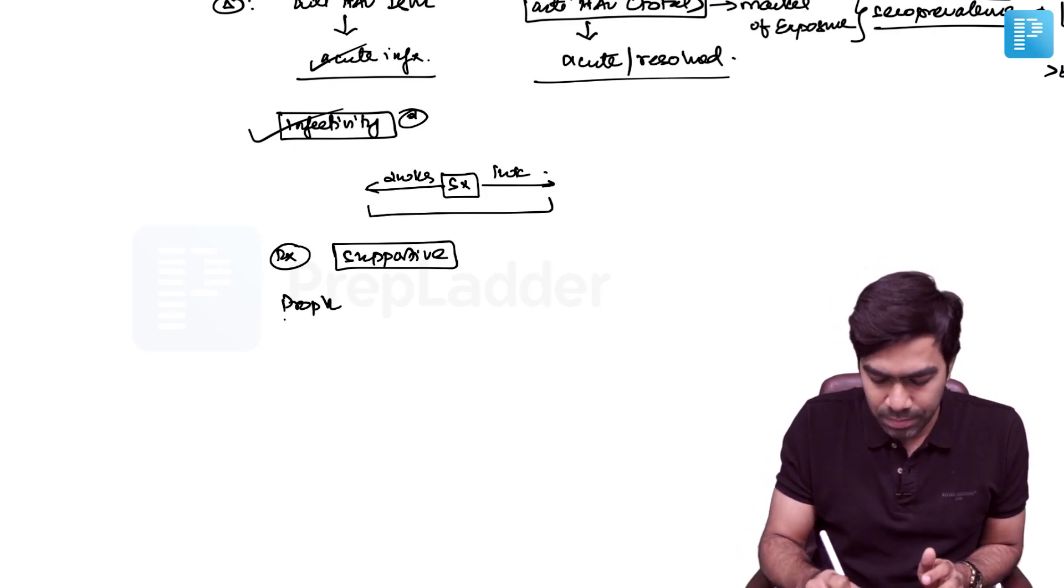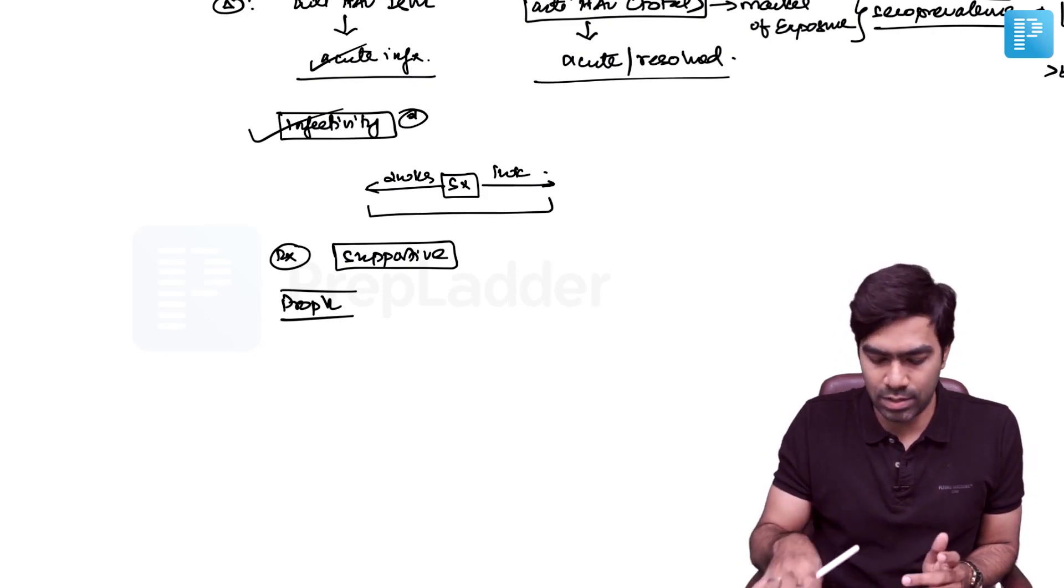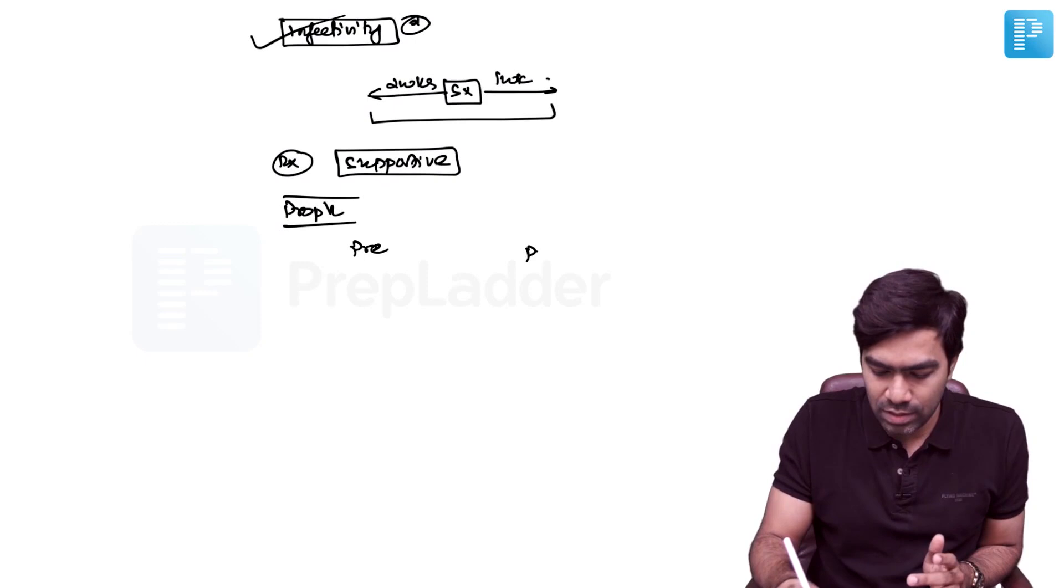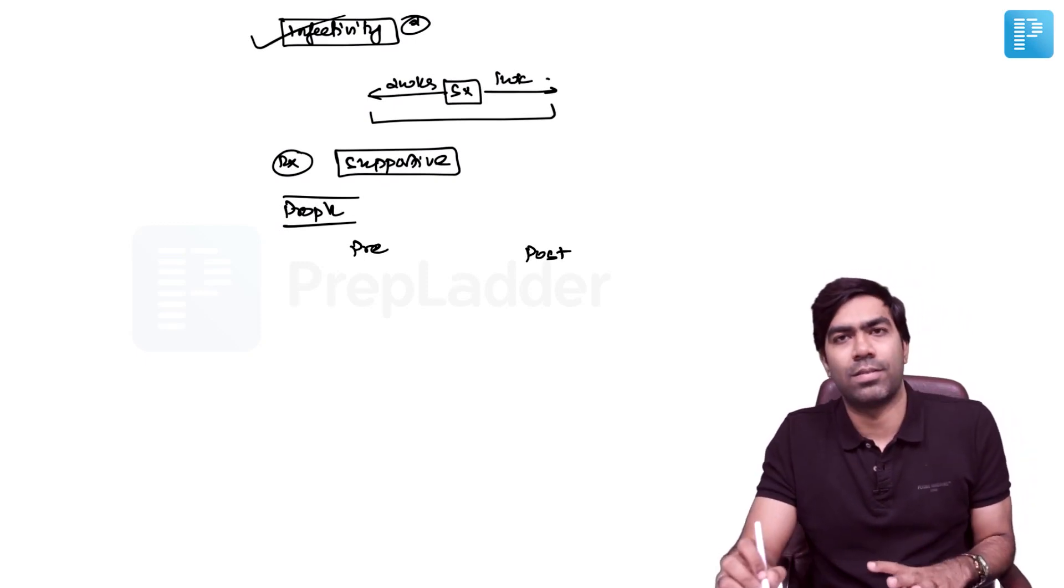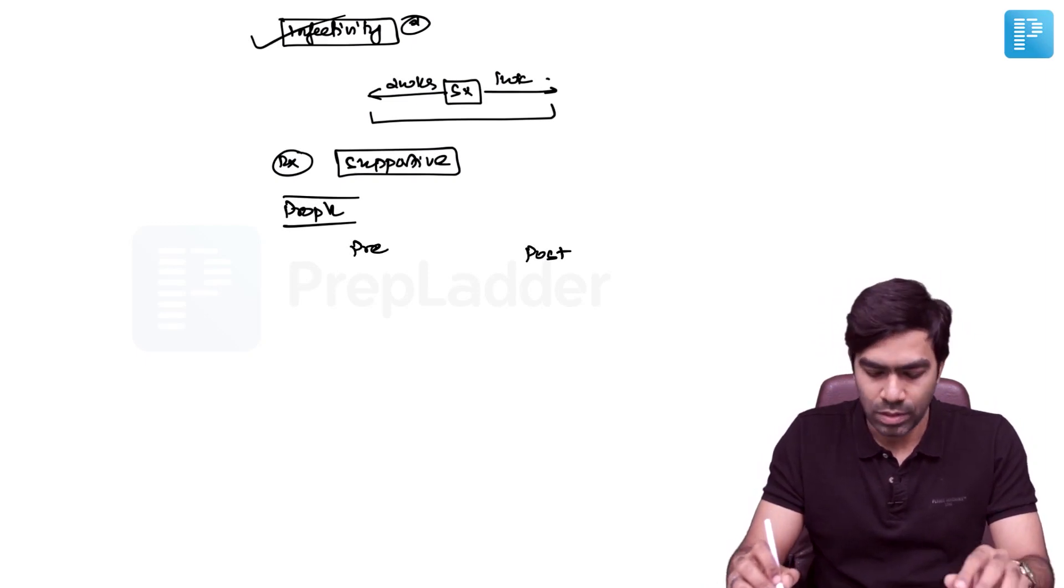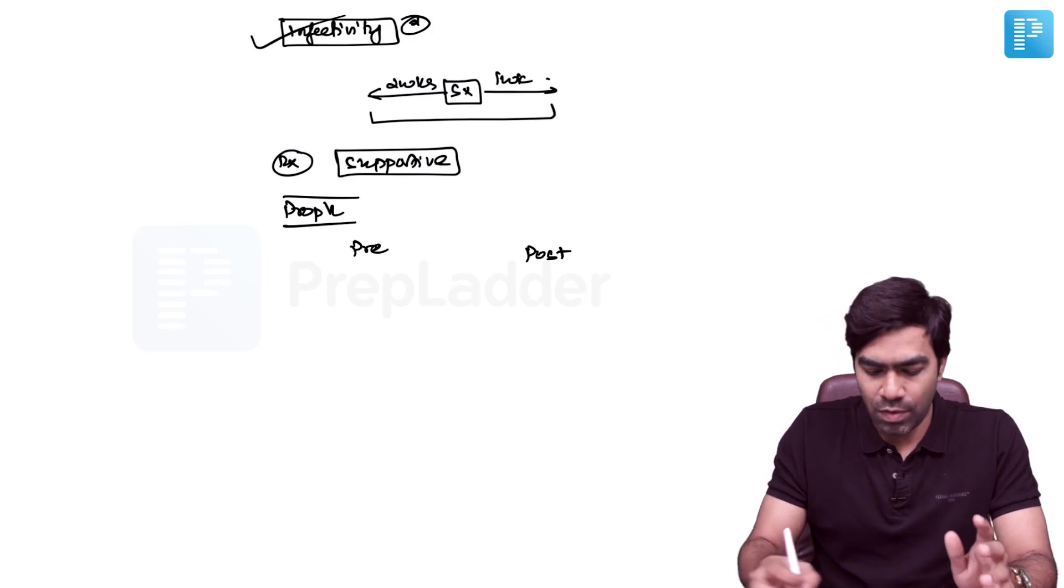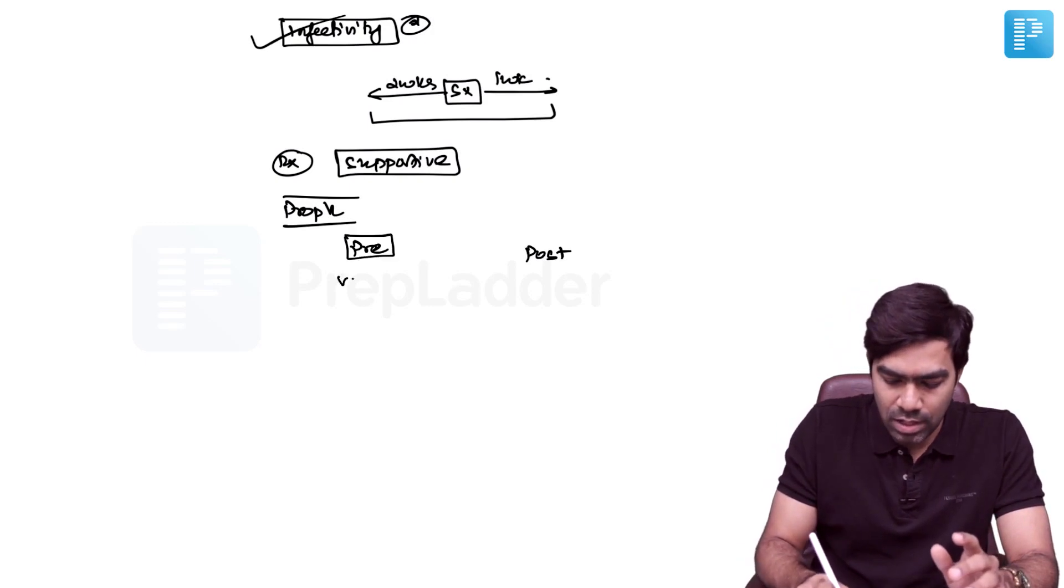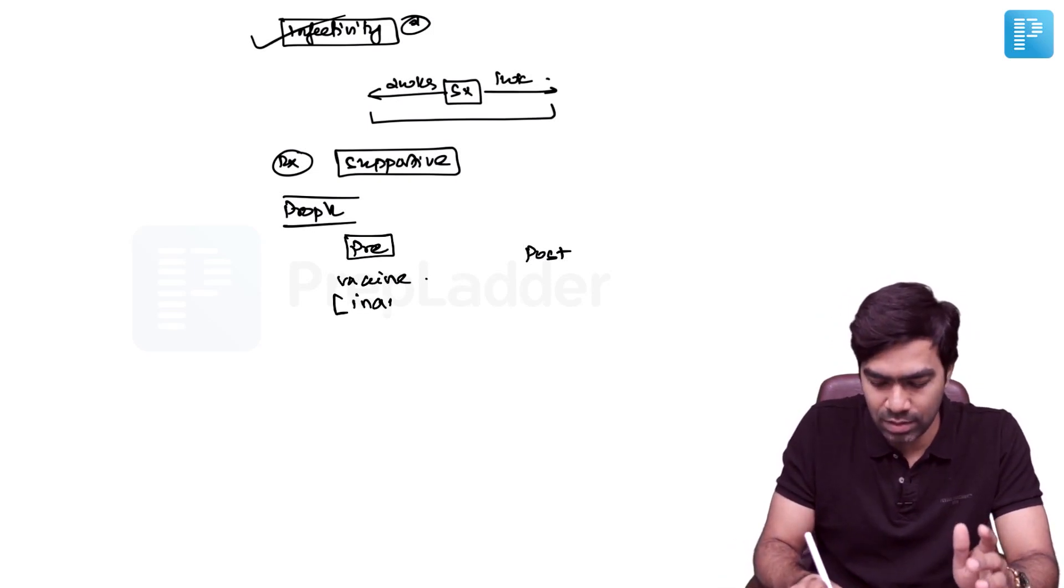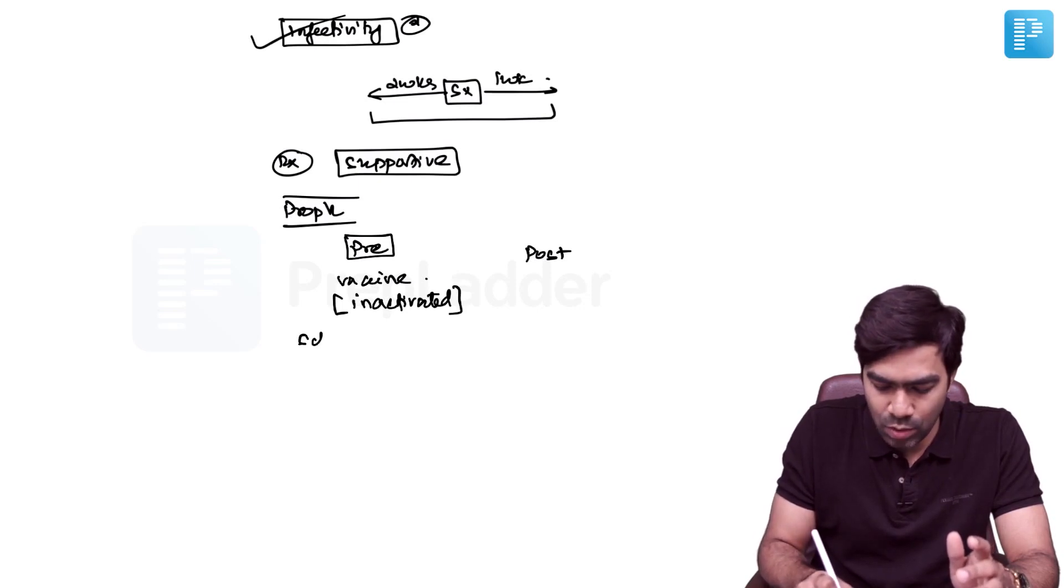Do you have prophylaxis? Yes, you have pre-exposure prophylaxis as well as post-exposure prophylaxis for Hepatitis A virus. Pre-exposure prophylaxis is done through vaccination. This vaccine is basically an inactivated vaccine, and you need to know the schedule.